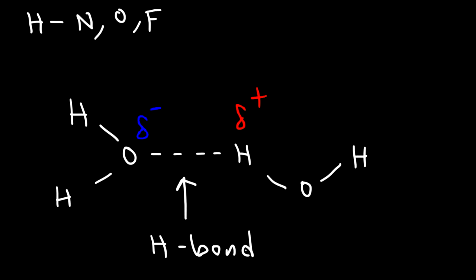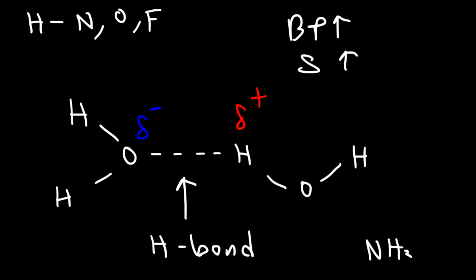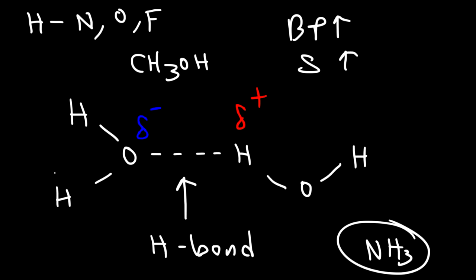Whenever you have hydrogen bonding, it increases the boiling point of the molecule and also increases the water solubility. For example, ammonia has hydrogen bonds and is highly soluble in water. Methanol has hydrogen bonds — you can see the OH bond — and as a result it has a relatively higher boiling point compared to molecules without hydrogen bonds, and the solubility of methanol in water is very high. Methanol mixes completely with water.